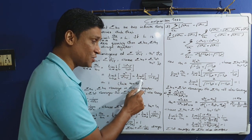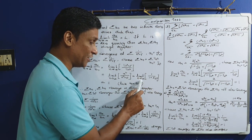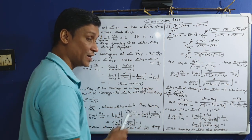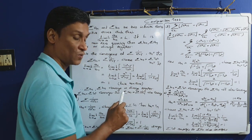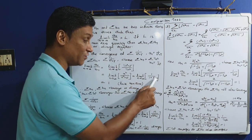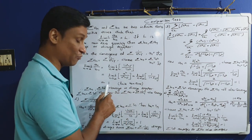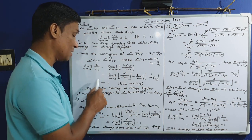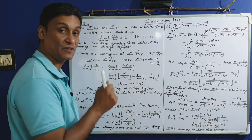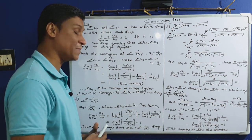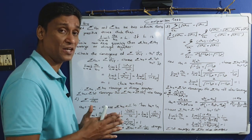Applying the limit as n tends to infinity, 5/n² tends to 0, so we get 1/(1+0) which equals 1. Therefore, the limit of a_n by b_n equals 1. This is a finite nonzero quantity, so sigma a_n and sigma b_n have the same behavior.